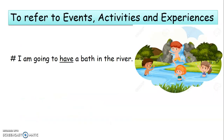Next, to refer to events, activities, and experiences — it indicates a particular event, activity, or experience that has taken place in a person's life. For example, 'I am going to have a bath in the river.' Here, 'I' is a plural pronoun, so we make use of the verb 'have'. Have shows the experience of the person.